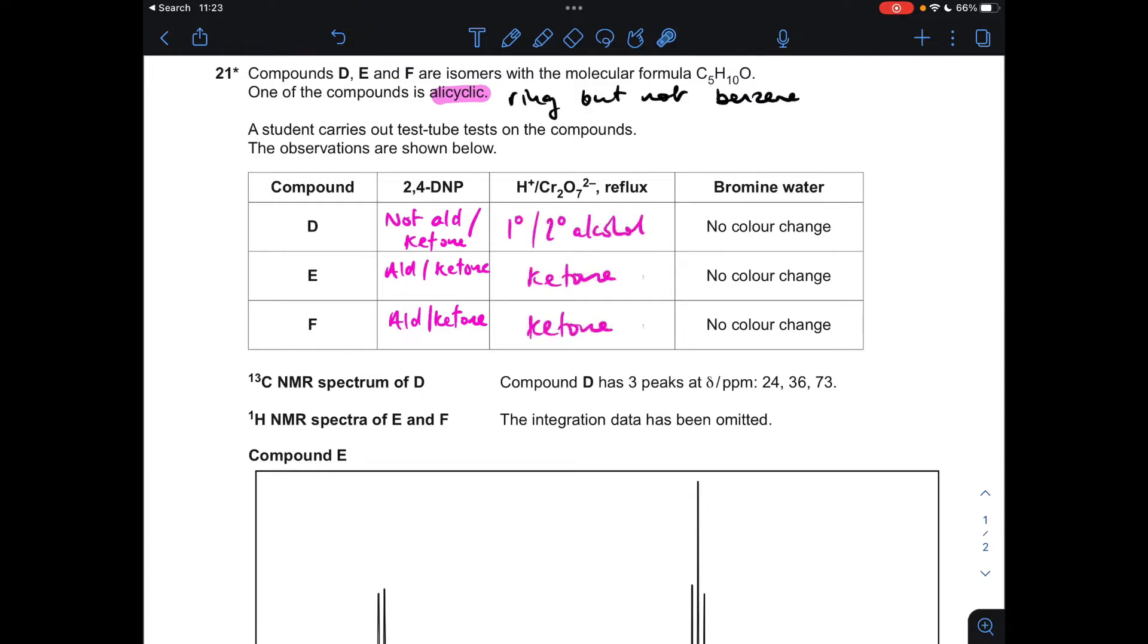And finally, the observation with bromine water. So that's the test for a carbon-carbon double bond. Well, there's been no change, so there's no C=C double bond in D, E or F.